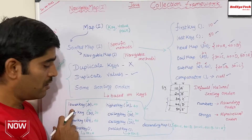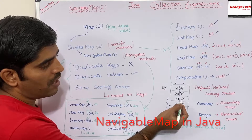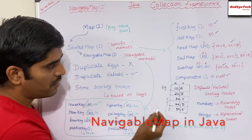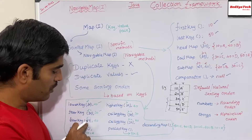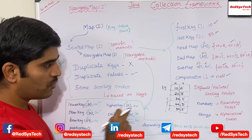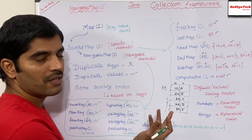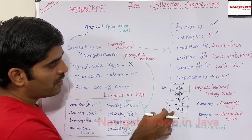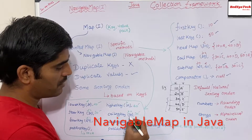There is a method called lowerKey(30), which means less than 30 — the last key before 30, which is 20. And floorKey(30) means less than or equal to 30; since 30 exists, it returns 30. If I call floorKey(29), since 29 doesn't exist, it returns the next lower value, which is 20. The lower/floor/ceiling naming follows mathematical conventions we use in typical mathematics.